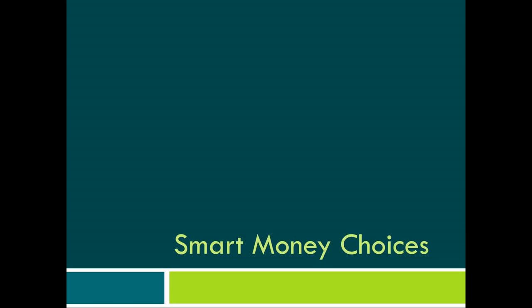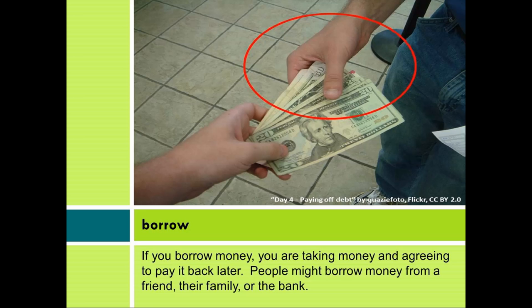Smart Money Choices. Borrow: If you borrow money, you are taking money and agreeing to pay it back later. People might borrow money from a friend, their family, or the bank.